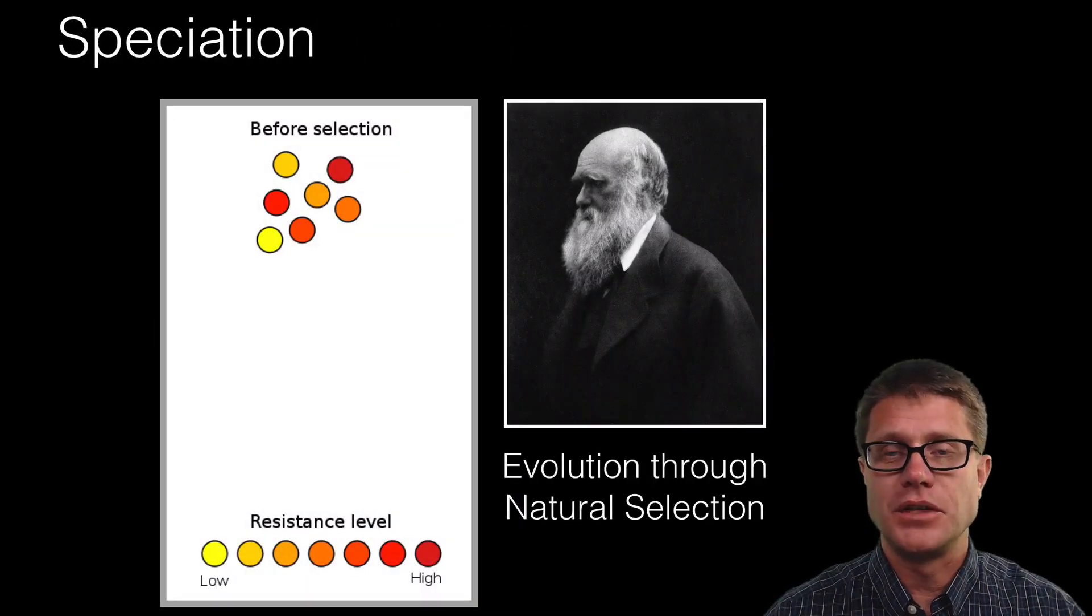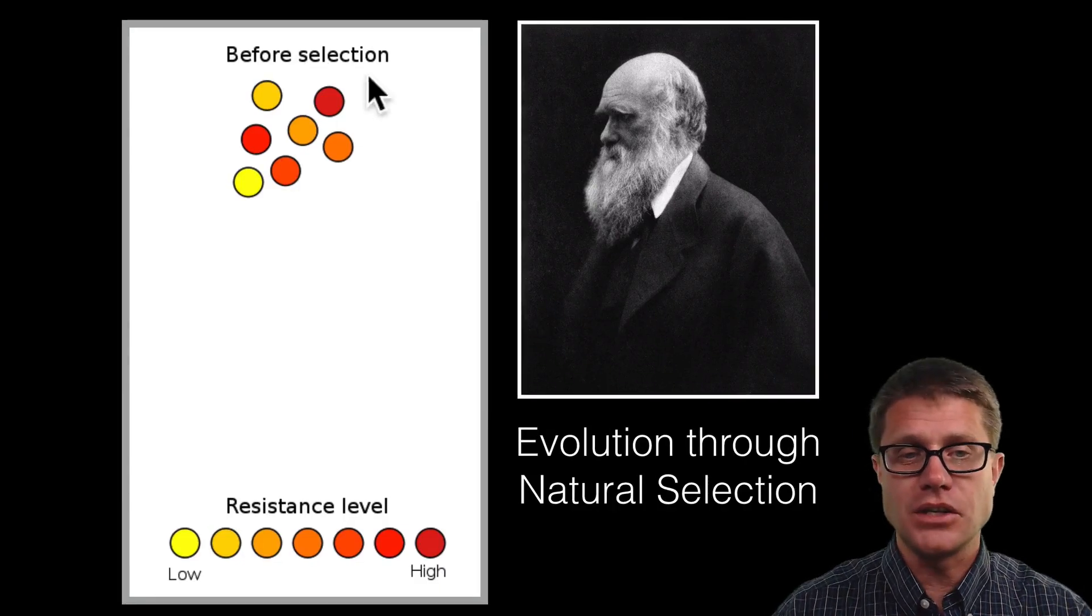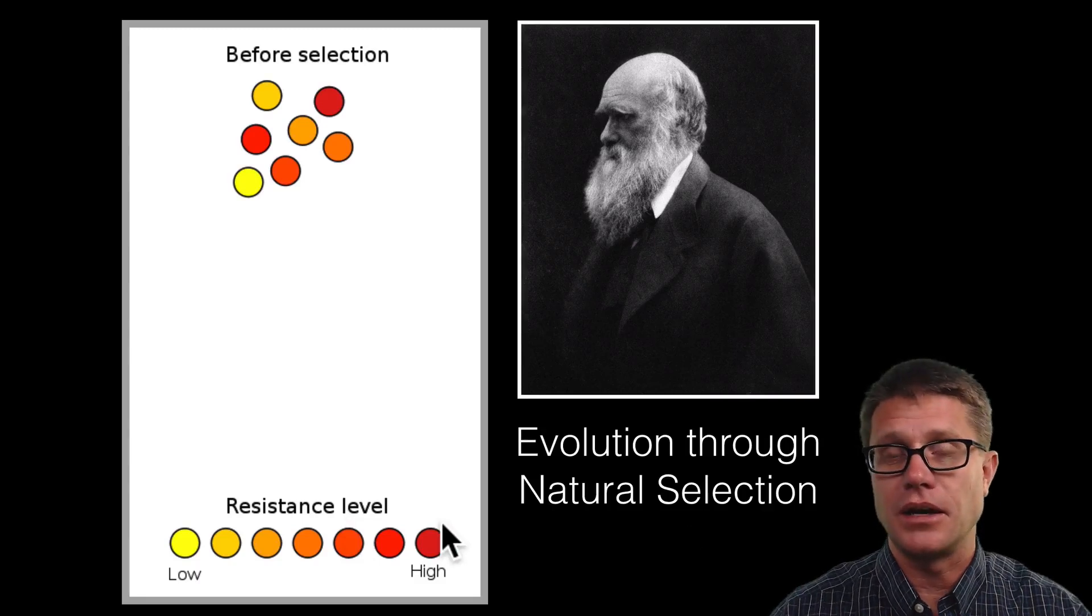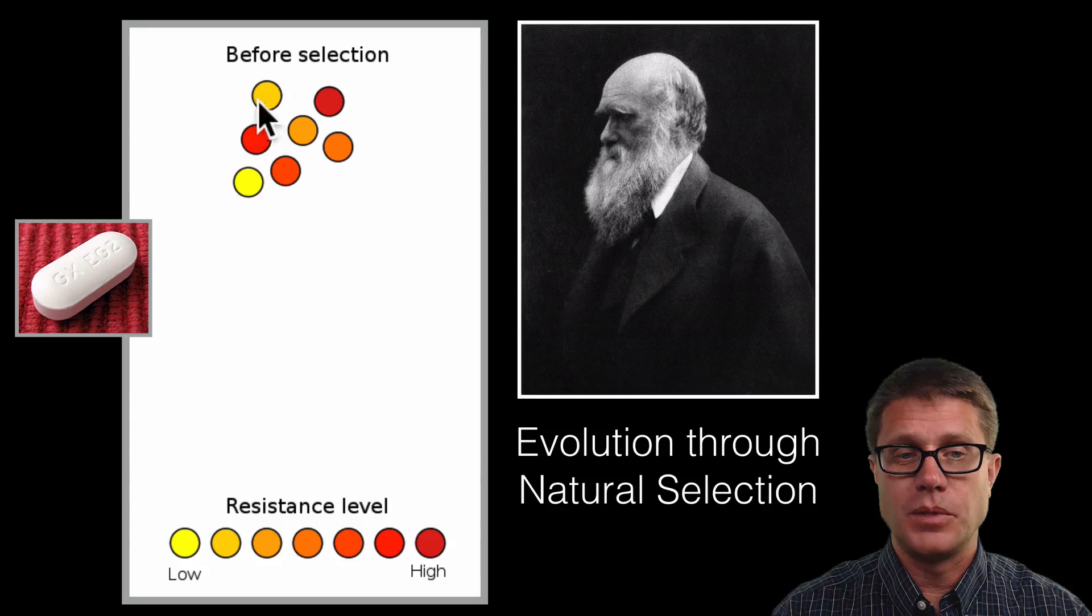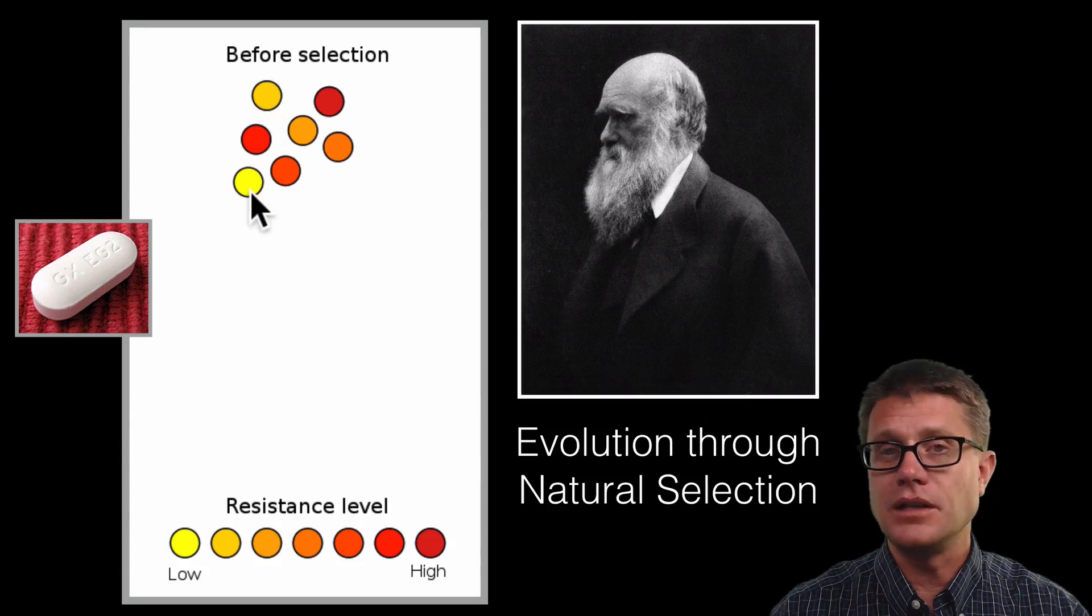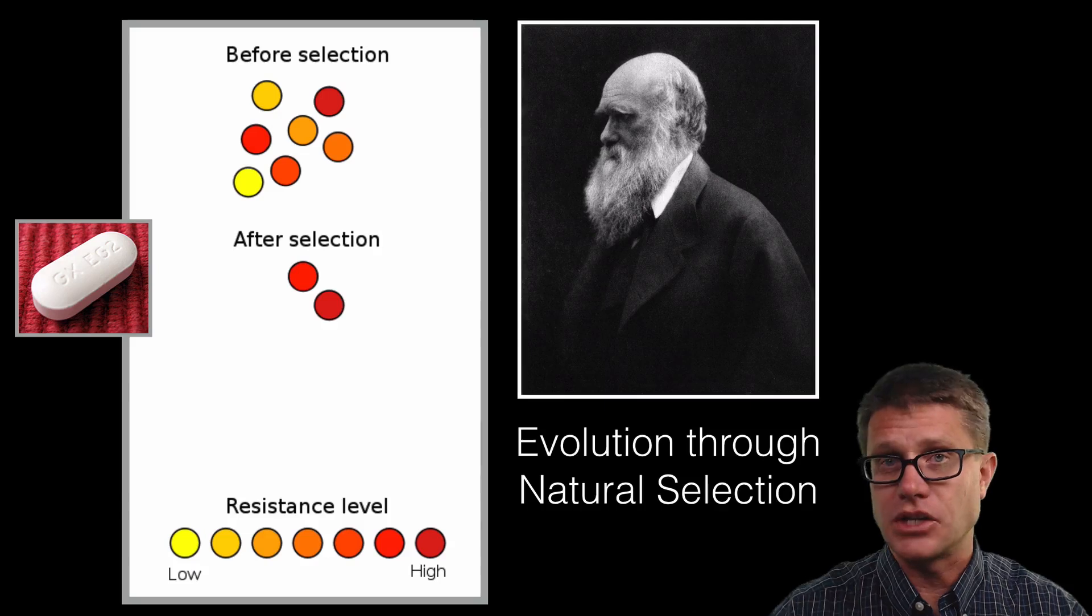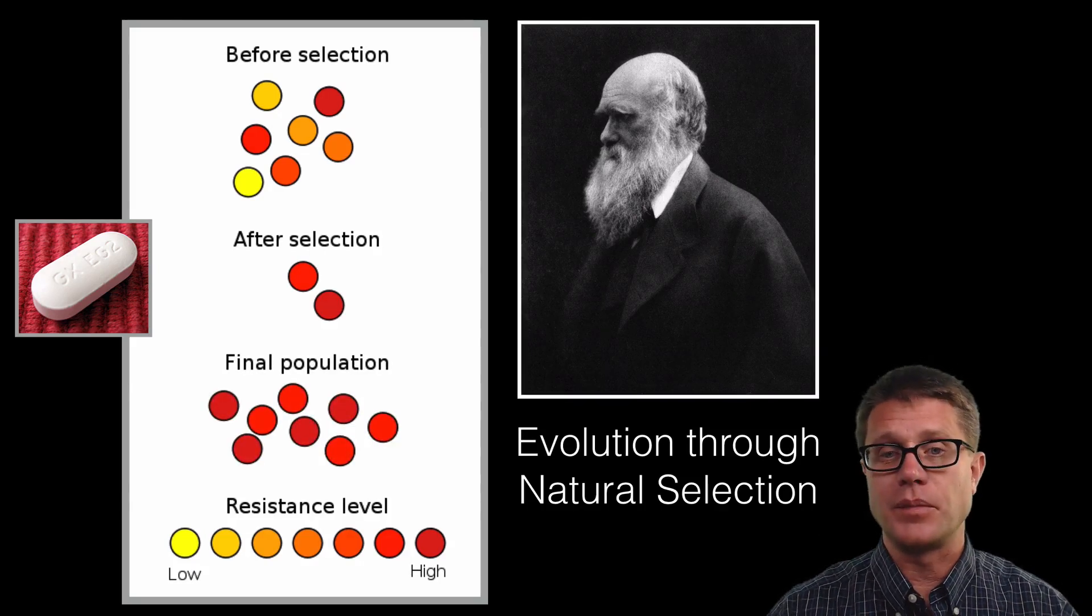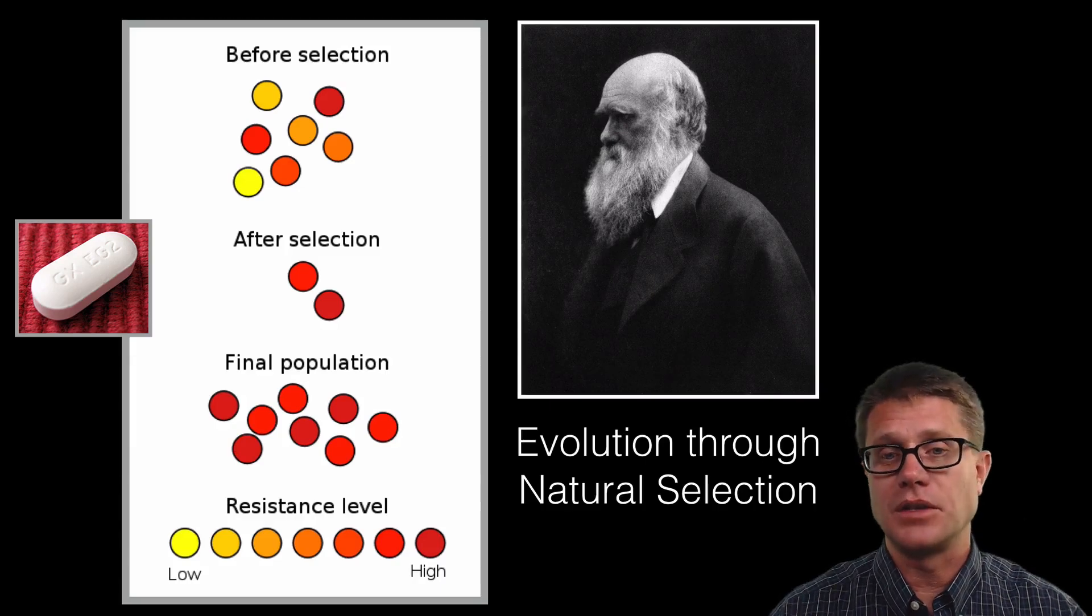It takes a lot longer for speciation to occur than extinction. So what is the major mechanism of speciation? It is evolution through natural selection. If you are not sure how that works, imagine we have got some bacteria with varying levels of resistance to an antibiotic. Let us say you take an antibiotic. Which of these are going to be killed? Well the ones that are least resistant. Once we take the antibiotic, this is after selection. Now here is our final population evolving over time. And that is how humans have become better adapted to their environment.